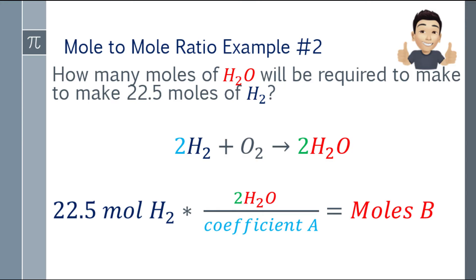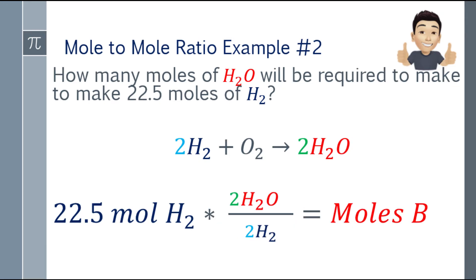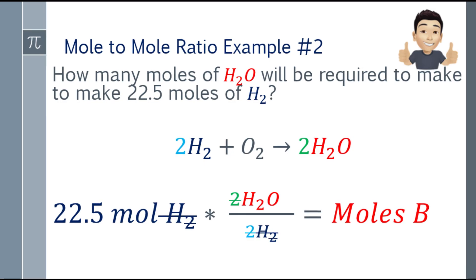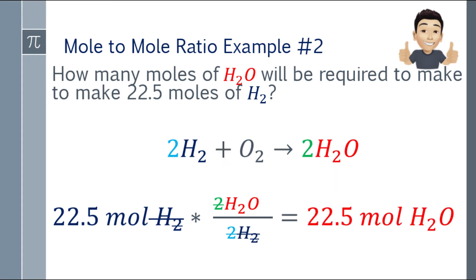Coefficient A is the coefficient of the given, which is 2H2. The H2 units cancel out, and 22.5 times 2 divided by 2 still equals 22.5 moles H2O.